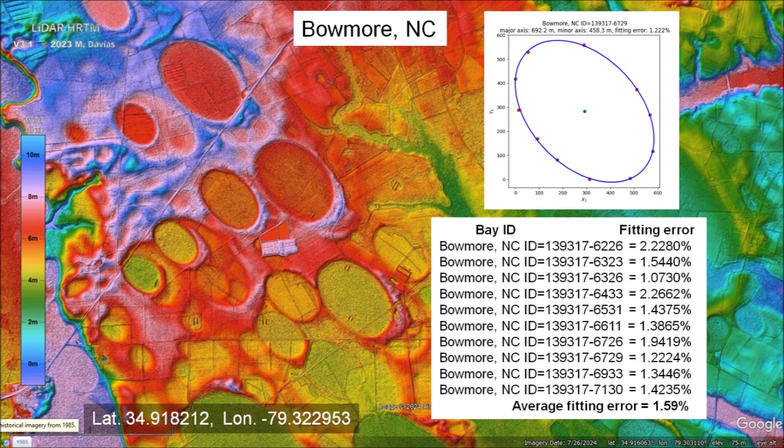Well-preserved Carolina Bays, like those near Beaumont, North Carolina, have a mathematically elliptical geometry with an average fitting error of 1.59%. In general, Carolina Bays have fitting errors of less than 3%.